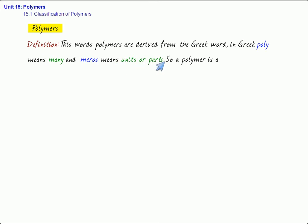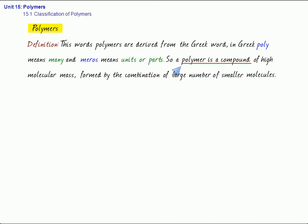So, a polymer is a compound of high molecular mass formed by the combination of large number of smaller molecules.